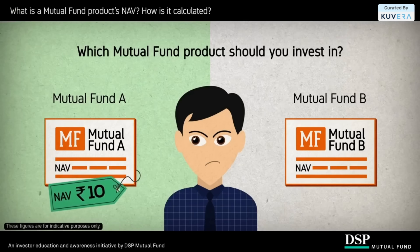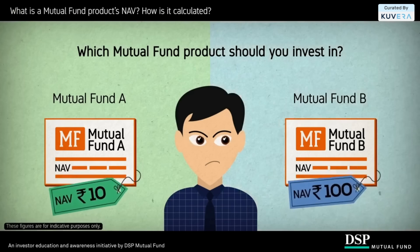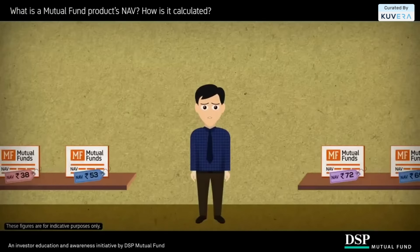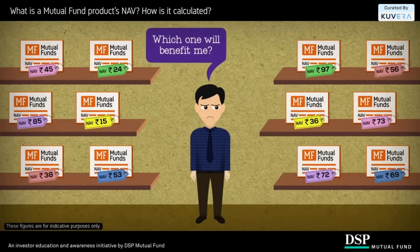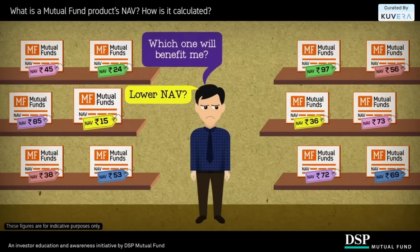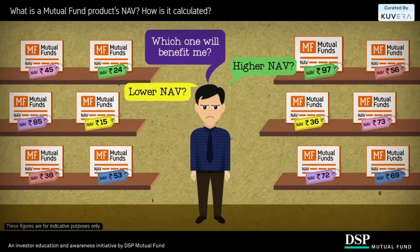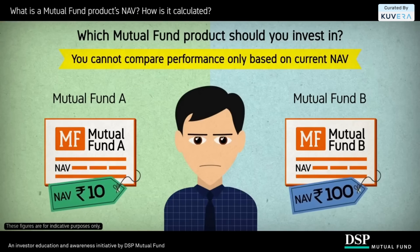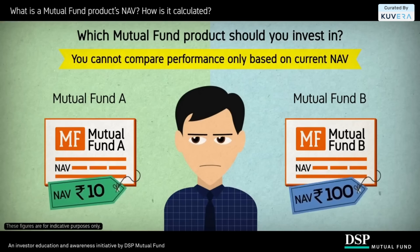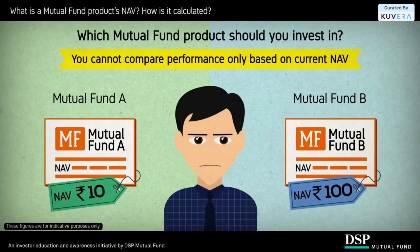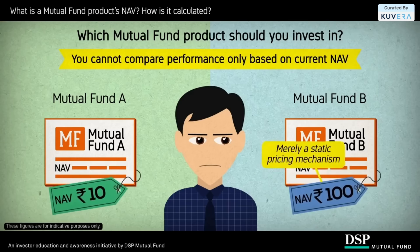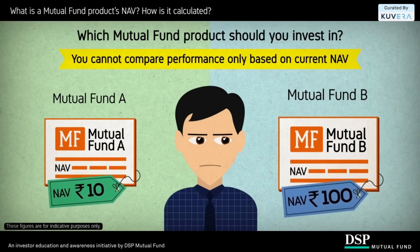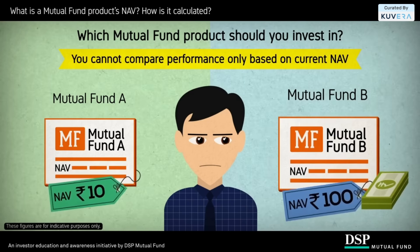Now, which of these products do you think is better — one with an NAV of rupees 10 or another with an NAV of rupees 100? This question, in different forms and with varying figures, often stumps young investors who are attracted to new fund offers or newly launched mutual fund products. The answer is that you cannot simply compare the performance of two products based only on NAV, because a product's NAV is merely a static pricing mechanism. A product with a higher NAV may in fact give you lesser returns than one with a lower NAV, or it may be the other way around.